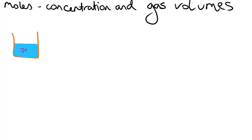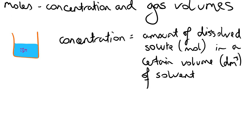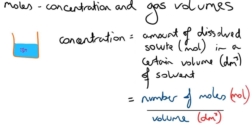We know that the amount of a substance in chemistry is known as a mole, so therefore the concentration of a solution is going to be the number of moles divided by the volume of the solution. Concentration is the amount of dissolved solute in a certain volume — dm³ or liters — of solvent. In terms of a formula, we work out the number of moles of the substance divided by the volume, and that gives us the concentration of the solution.